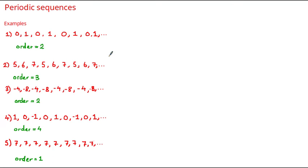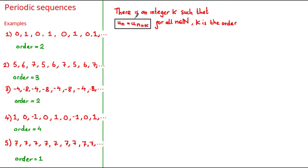Looking at all of these sequences, one observation we can make is that every term always appears again inside the sequence. If we take the 5, 6, 7 sequence for example, we have 5, 5, 5, we also have 6, 6, 6, and we've got 7, 7, 7. So given our observation, let's formalize the definition of a periodic sequence: a sequence is said to be periodic if there is an integer k such that u sub n is equal to u sub n plus k for all values of n belonging to the set of natural numbers, where k is the order. At first glance this seems quite confusing, but once we understand it we'll see that it's a very powerful way to describe a periodic sequence.